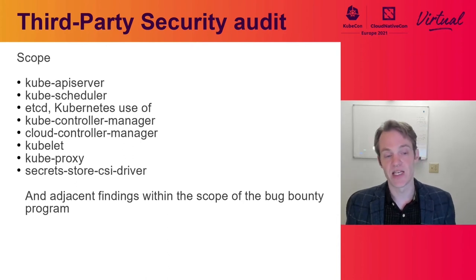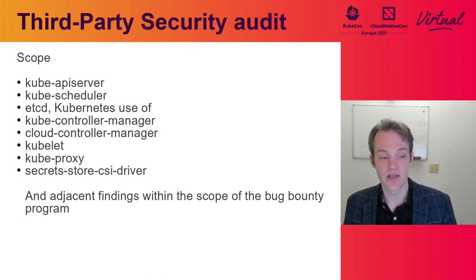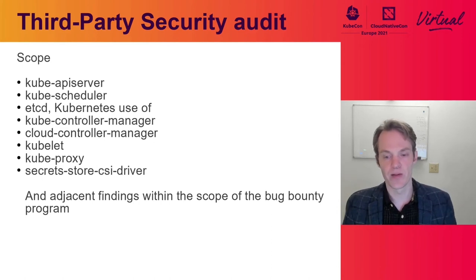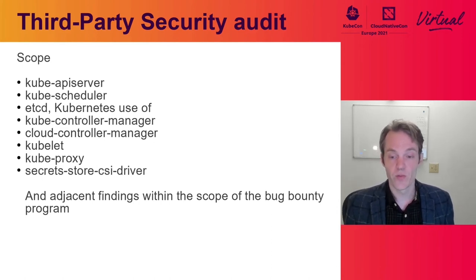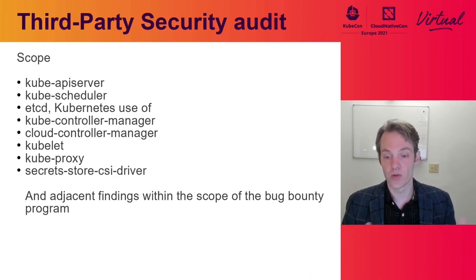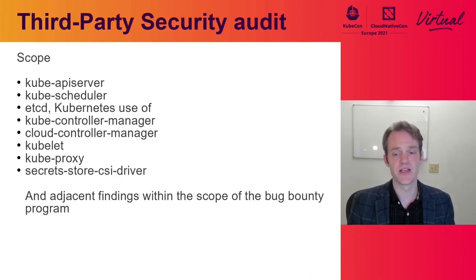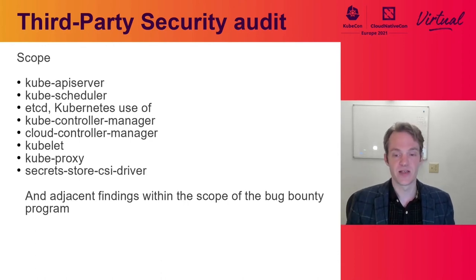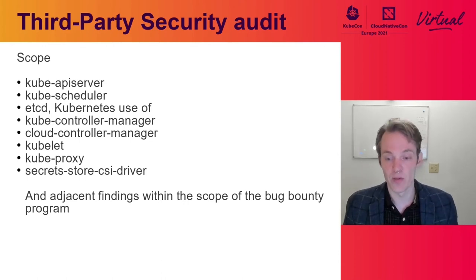As we go through the process of evaluating these components, adjacent stuff is going to come up. We're just going to use the public bug bounty program scope to determine if they're in or out. Rule of thumb: if it's part of Kubernetes or one of the other repos, it's probably in scope. But if it's related to a specific deployment technology or a specific distribution, it's probably out of scope.